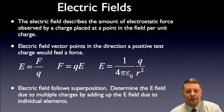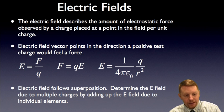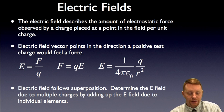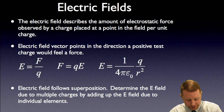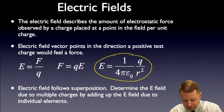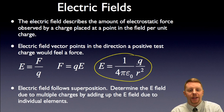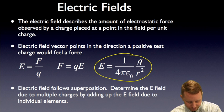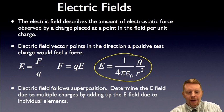The electric field describes the amount of electrostatic force observed by a charge placed in that field per unit charge. The electric field vector points in the direction a positive test charge would feel a force. So the electric field strength E is equal to the force divided by that test charge, or force equals charge times the electric field. If we plug Coulomb's law into E equals F over Q, we get that the electric field is 1 over 4 pi epsilon-naught times the charge causing that field, divided by the square of the distance from that charge to the point in space where you're measuring the field. Electric fields follow the law of superposition: if you want to know the field due to several different point charges, find the field due to each and add them up.